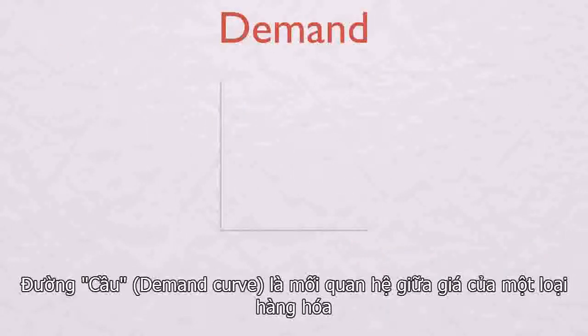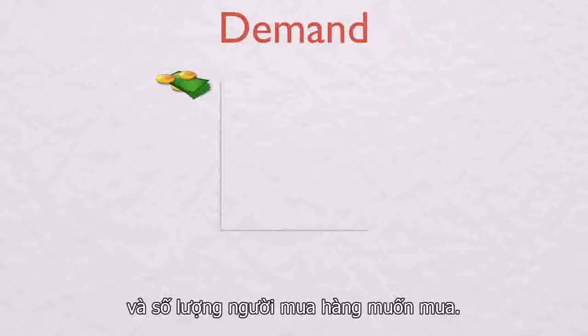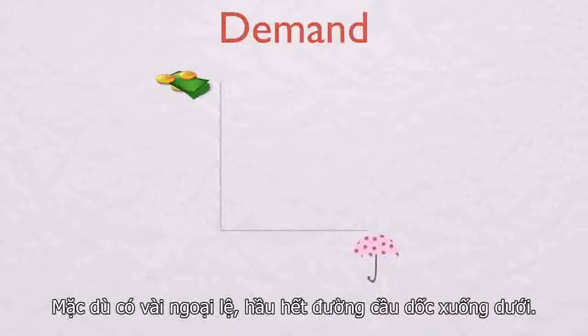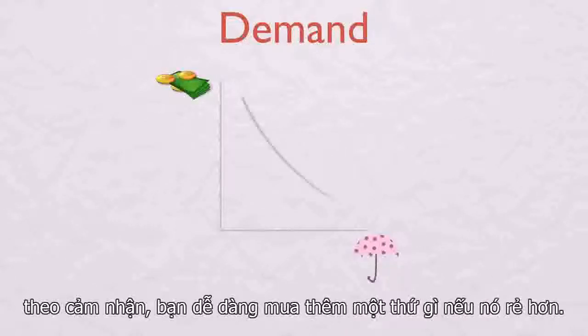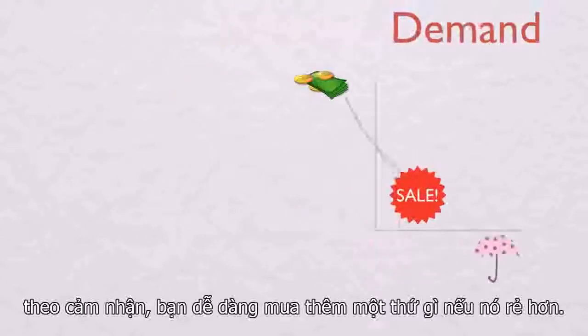Now, on to demand. A demand curve is a relationship between the price of a certain good and the amount of that good buyers want to buy. Although there are exceptions, most demand curves slope downwards. Intuitively, you'll buy more of something if it's cheaper.